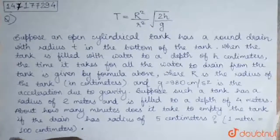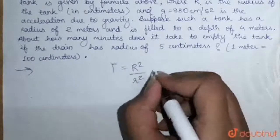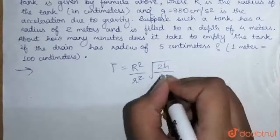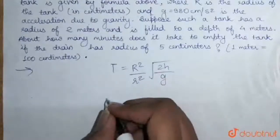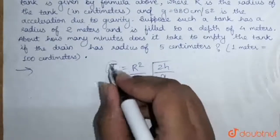Now, the equation given to us is: t equals capital R squared upon r squared, under root 2h upon g. We have to find the time, which is t.